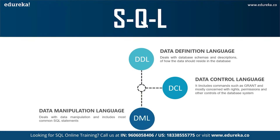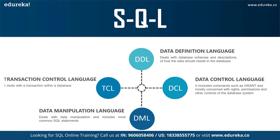The next command is DML — Data Manipulation Language. It allows you to access and manipulate data, helping you insert, update, delete, and retrieve data from the database. The INSERT command is used to insert data into a table, UPDATE is used to update existing data within a table, and DELETE is used to delete records. The final command is TCL — Transaction Control Language — which deals with transactions of the database. TCL commands include COMMIT, ROLLBACK, SAVEPOINT, and SET TRANSACTION.